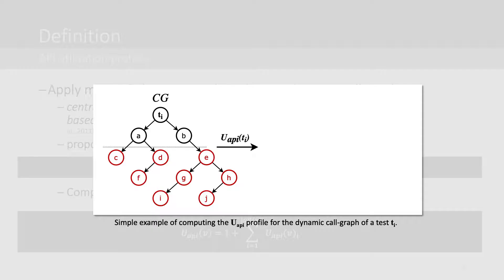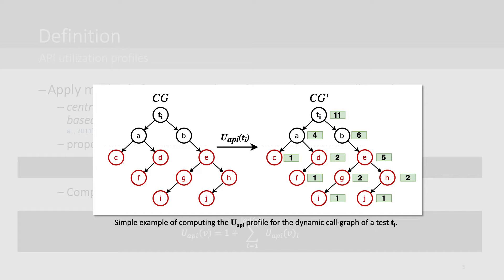Let me give you a small example. Assume this is a very simple dynamic call graph obtained for a test method TI. Each vertex denotes a method; each edge denotes a call from one method to another. So method TI calls method A, A calls method C, B calls method E, and so forth. When we apply the UAPI computation for method TI, we end up with the values depicted in the figure on the right. By applying the UAPI computation to a particular call graph, we enrich that call graph with information on the API interactions for each method.